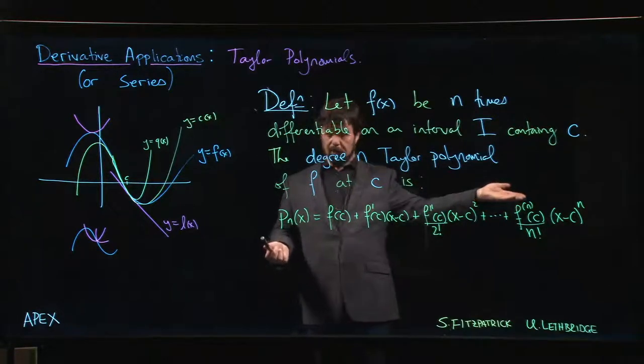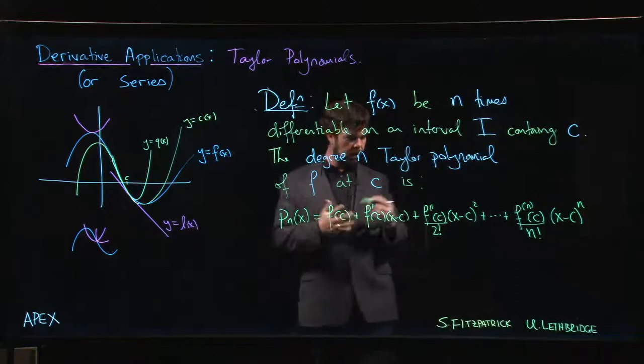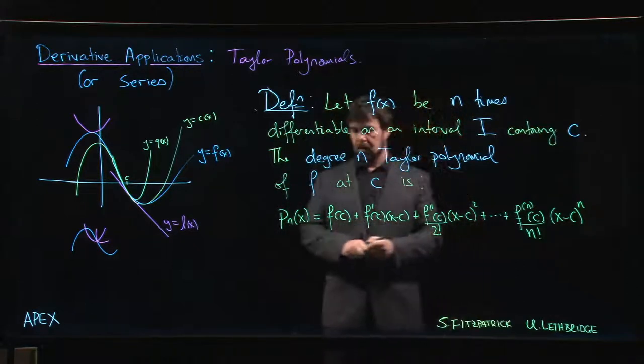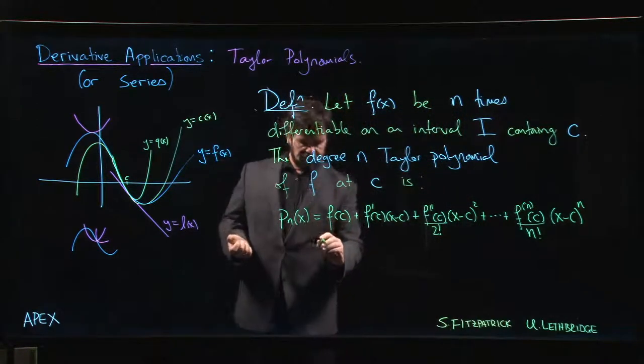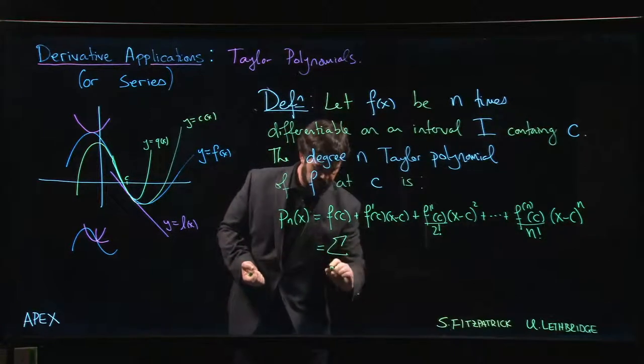Degree three and so on - you can go up to really any degree that you want. That's your Taylor polynomial. If you like, you can write this in summation notation.